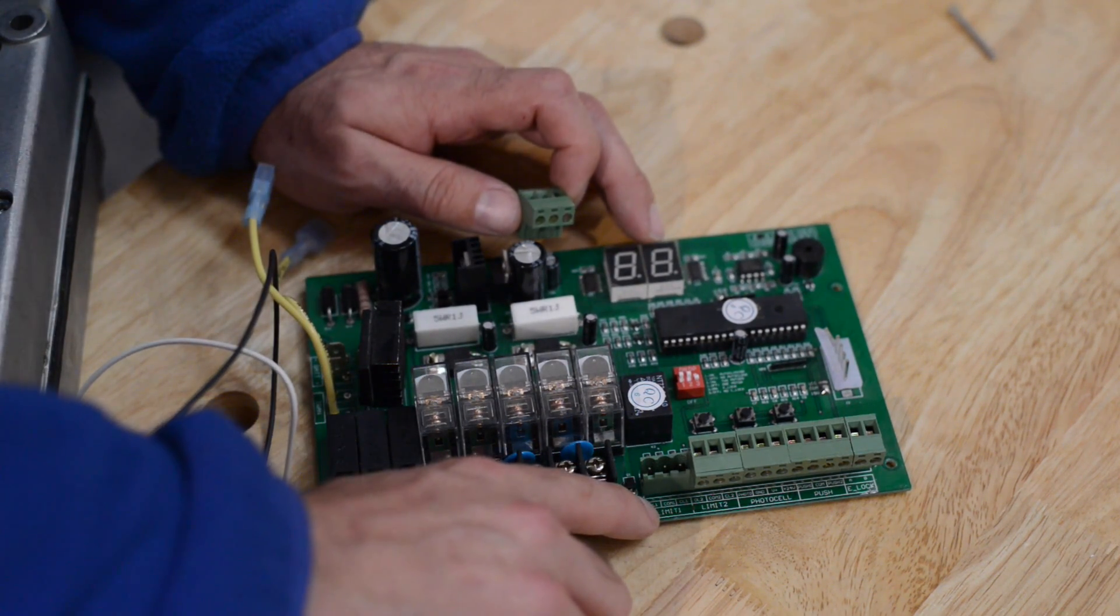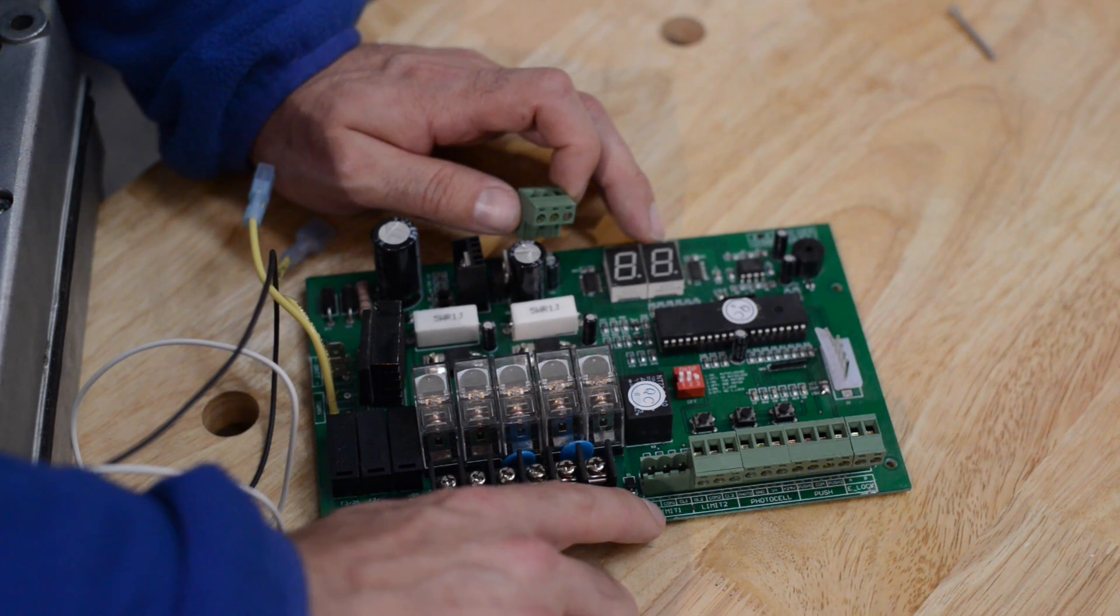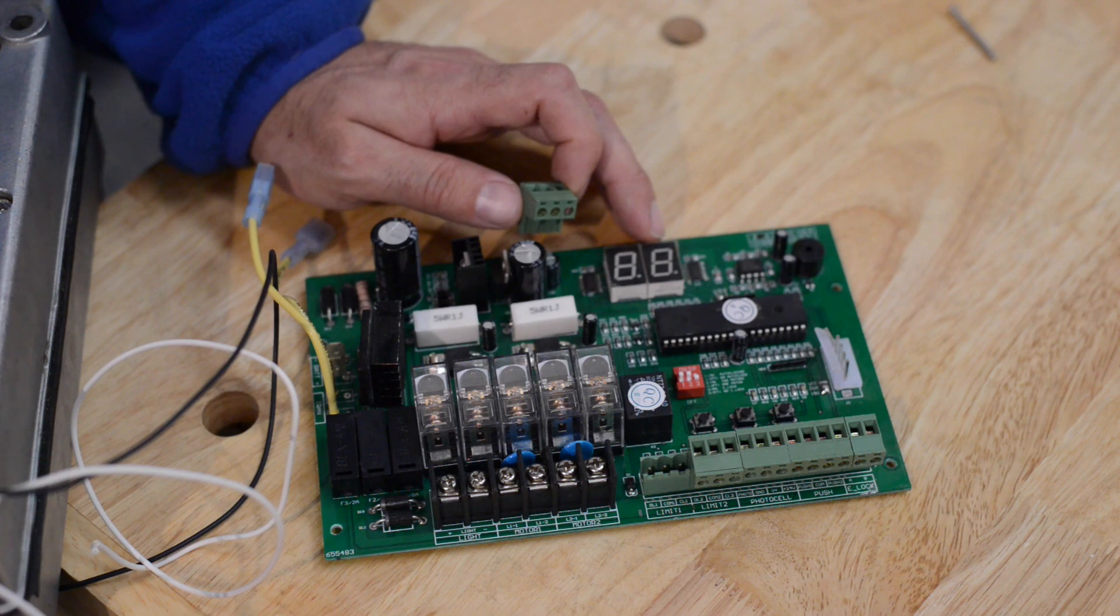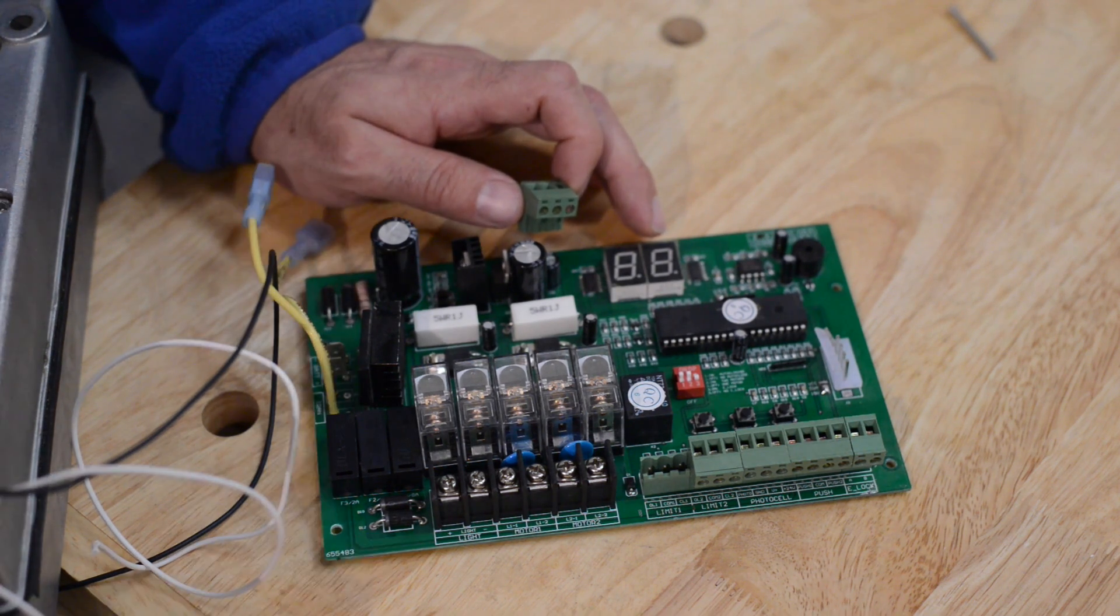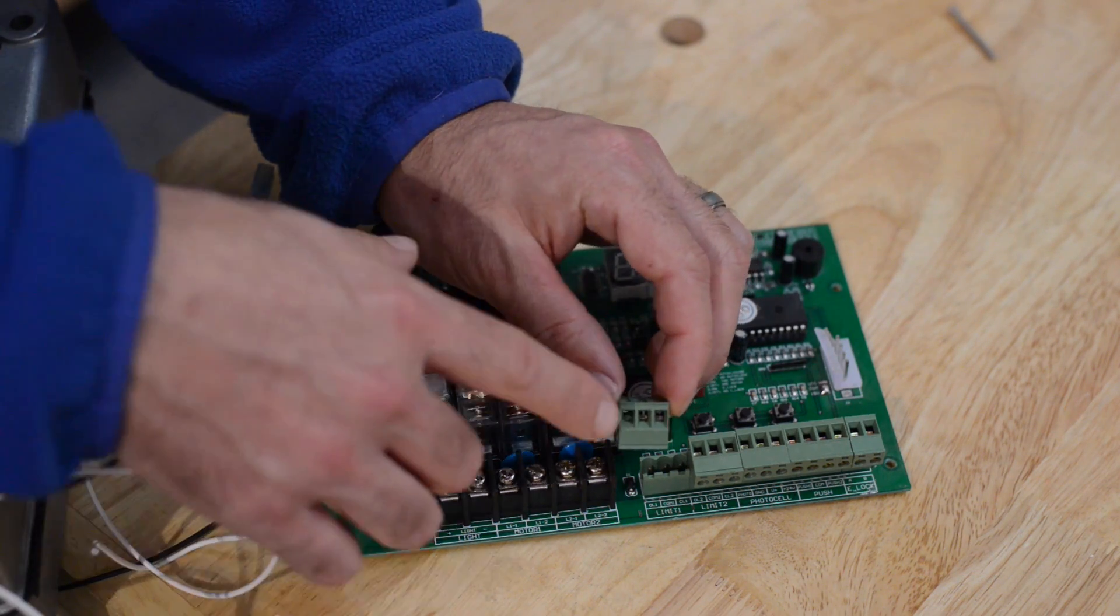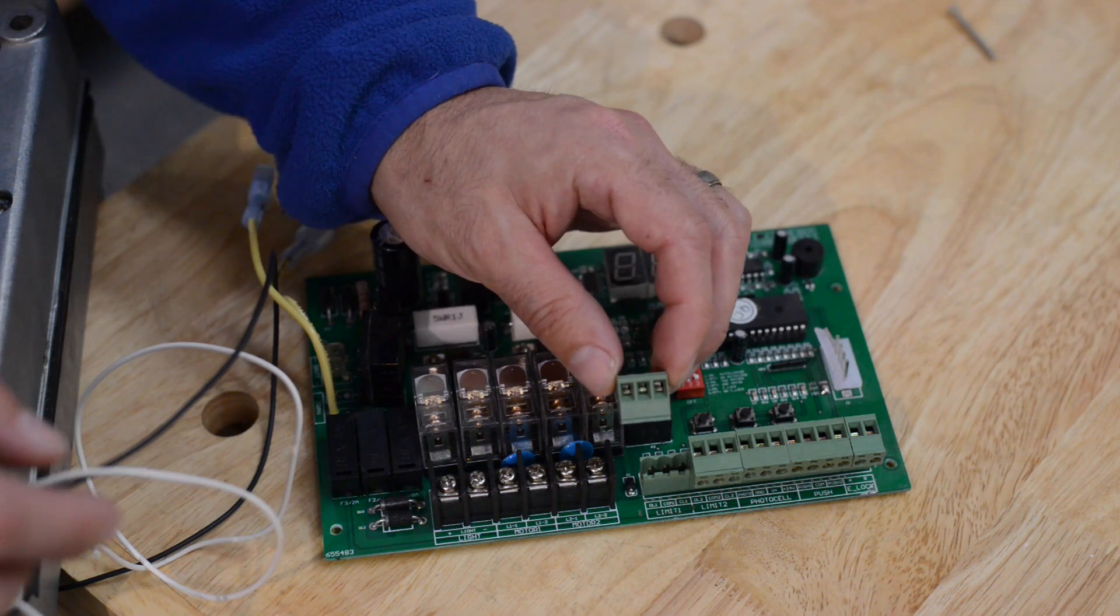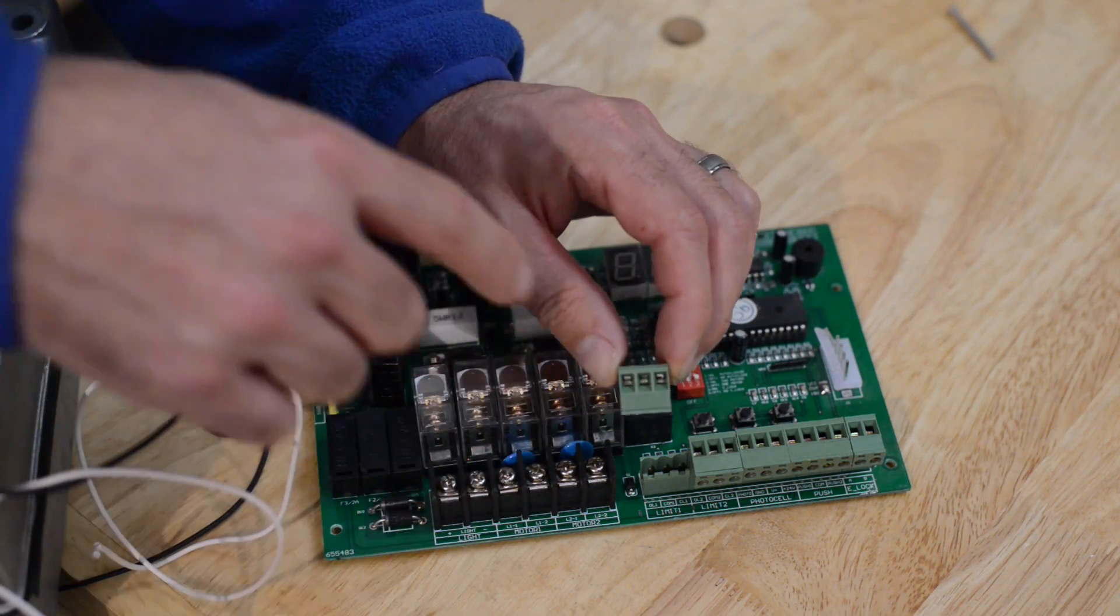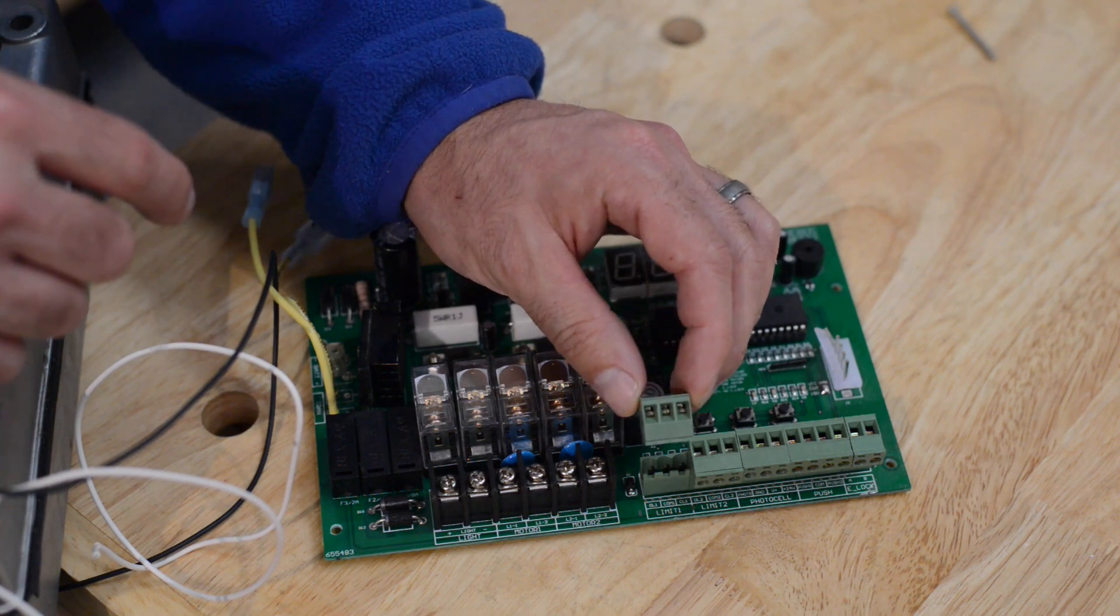Now in even smaller writing here you will see OL1, COM1 and CL1. COM1 is where your two commons from your limit switch are going to go to. So in your terminal block you are going to wire either the two wires from the COM or the two wires that were connected to a single wire leading back to this terminal. The center terminal on the block.